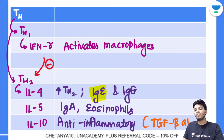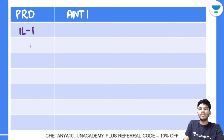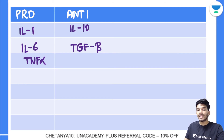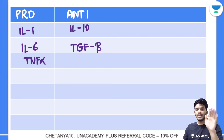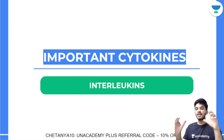To summarize: pro-inflammatory cytokines are IL-1, IL-6, and TNF-alpha. Anti-inflammatory cytokines are IL-10 and TGF-beta. This covers the important cytokines and interleukins in immunology — sufficient for answering all basic questions on this topic. Thank you guys, I hope you liked this compilation.